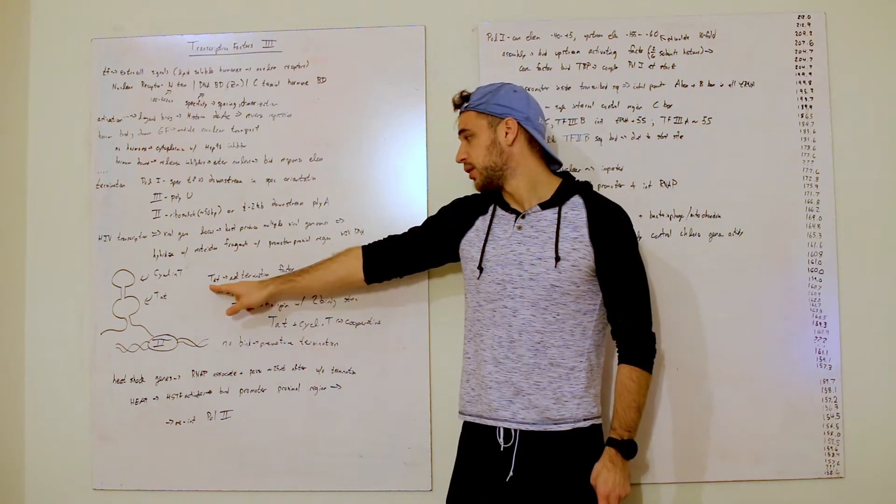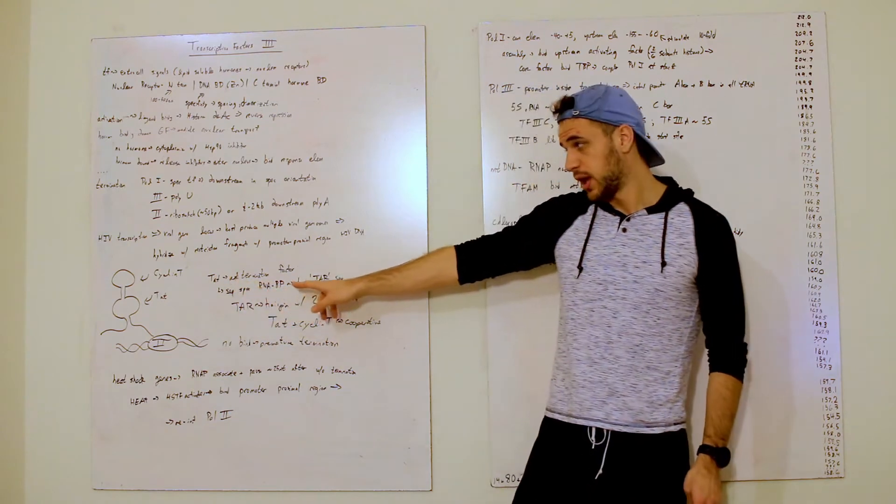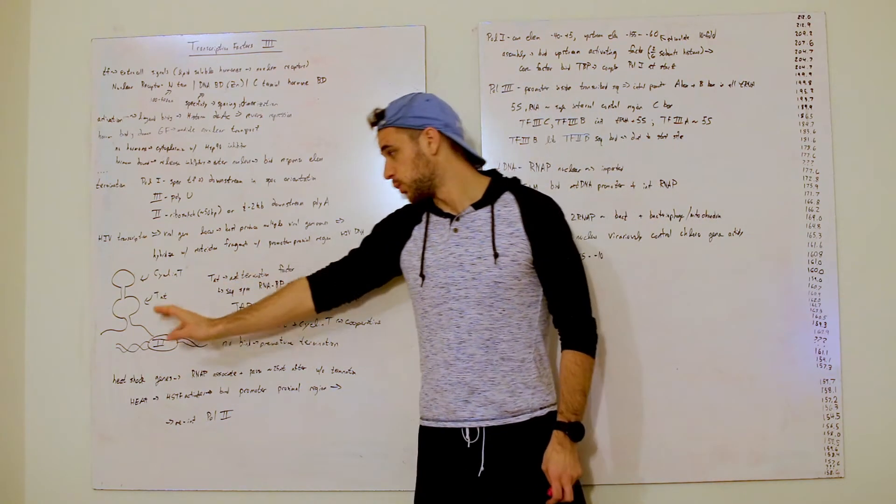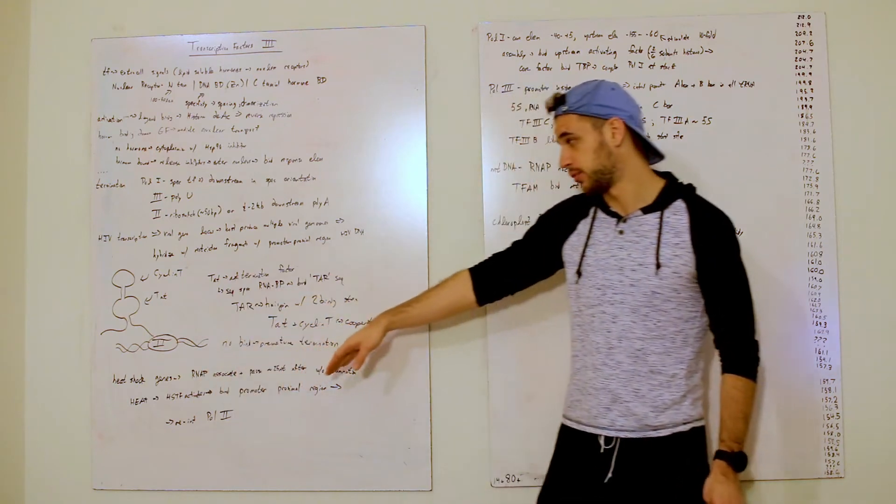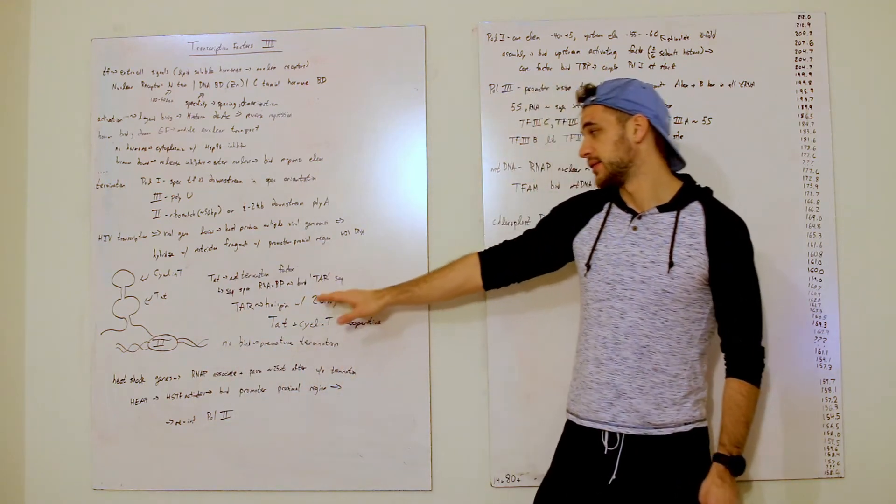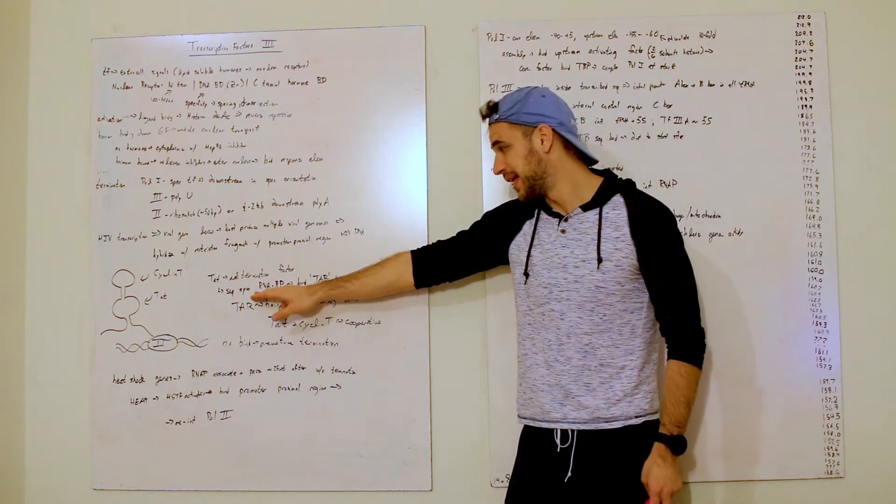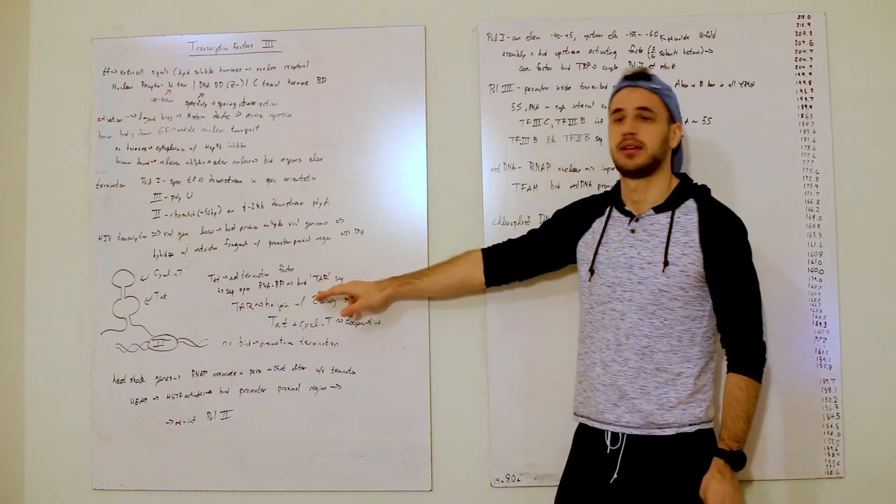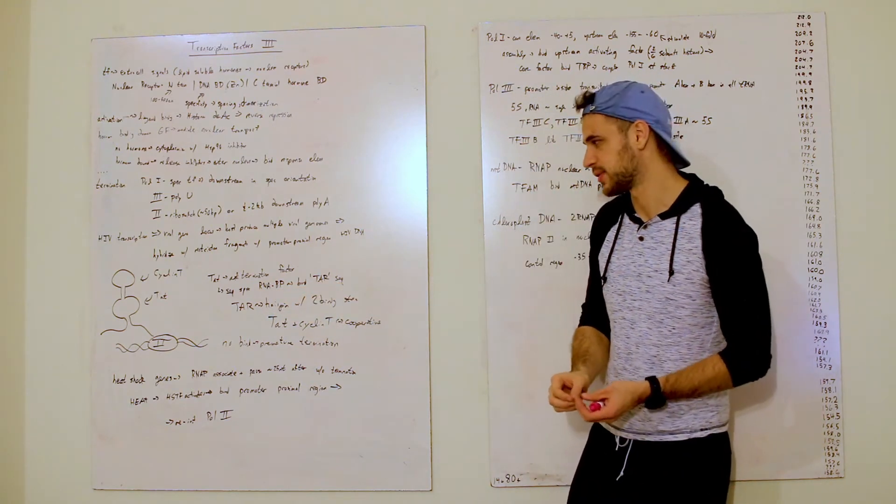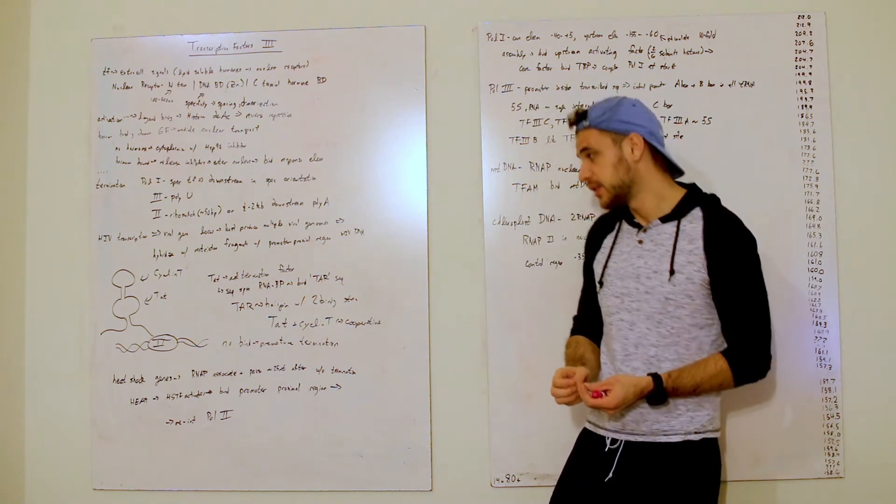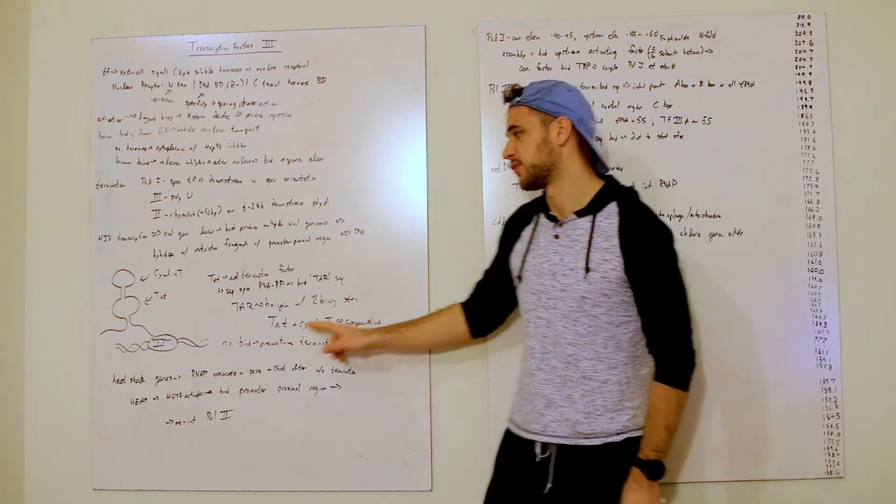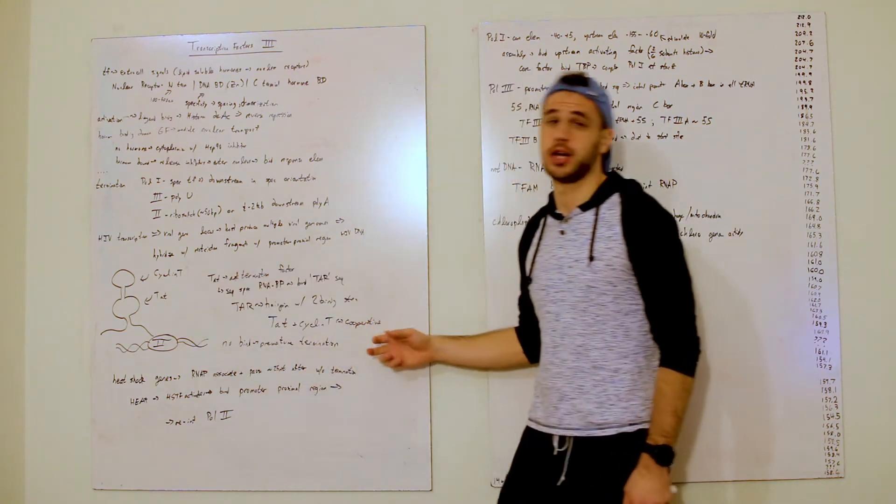So, TAT is an anti-termination factor, and this is a riboswitch. So once TAT binds here, it'll continue on going through, and it binds at this RNA, binds at a specific place of the TAR sequence. And this TAR hairpin has two binding sites for TAT and cyclin-T, which actually bind cooperatively.